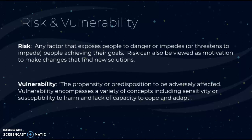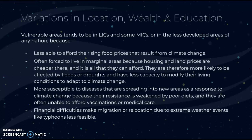We're going to think about how people's location, wealth, and education might impact their vulnerability and risk to climate change. Vulnerable areas tend to be in LICs and some MICs, or in the less developed areas of any nation, because people in lower income groups are less able to afford the rising food prices that arise from climate change. They're often forced to live in marginal areas because housing and land prices are cheaper there, and are therefore more likely to be affected by floods or droughts and have less capacity to modify their living conditions to adapt.